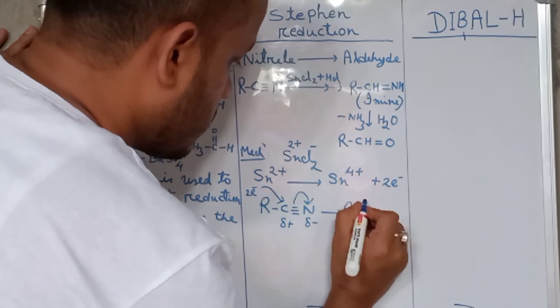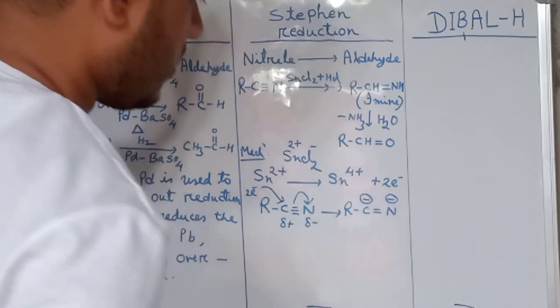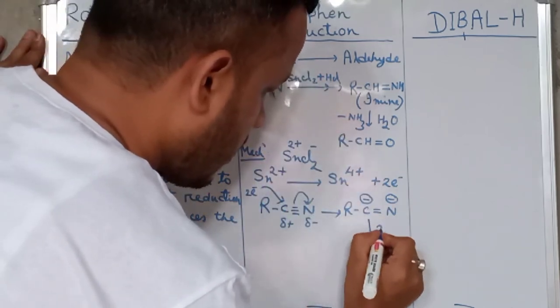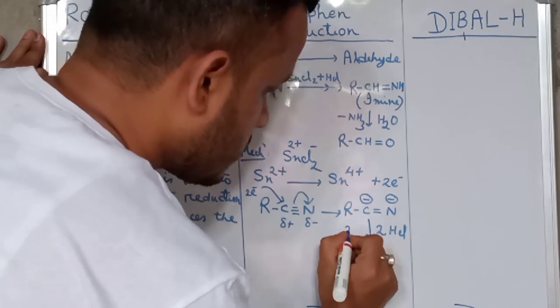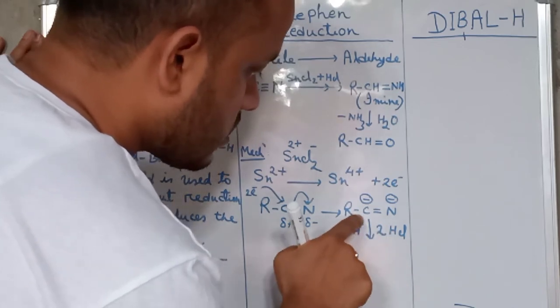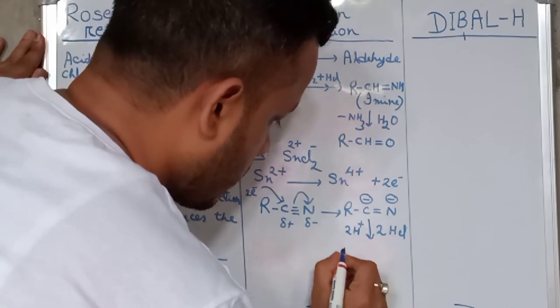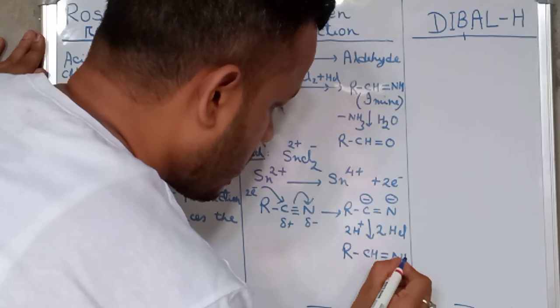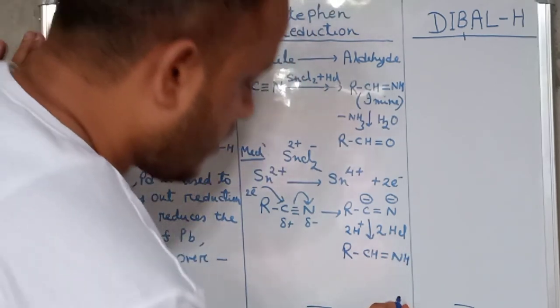This forms RC-N-. We have HCl, so 2 molecules of HCl will give 2 H+. One H+ is abstracted by carbon and another by nitrogen, so it forms RCH=NH. This is imine.